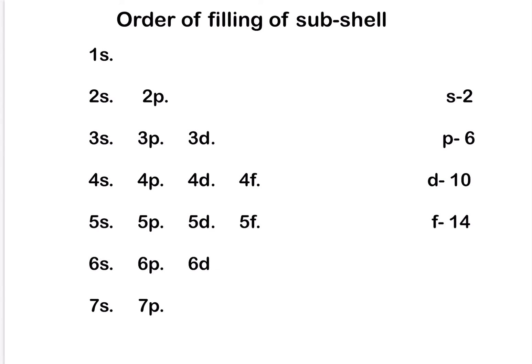Then you will see 2P, 3P, 4P, 5P, 6P, 7P. Then 3D, 4D, 5D, 6D, and 4F and 5F. Now the order of filling of subshells will be according to what I am drawing.